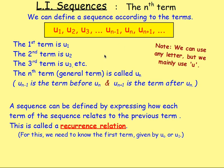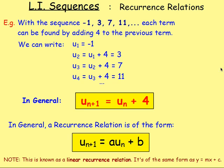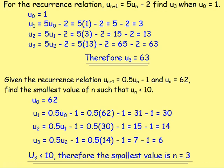We saw that you can define a sequence two ways: either as a formula for un in terms of n, or — because you've often got one term relating to the previous term — you can define it as a Recurrence Relation. For that you need to know the first term, given by either u1 or u0. A Recurrence Relation is of the form un plus 1 equals a·un plus b — that is your linear Recurrence Relation.